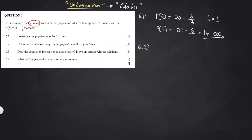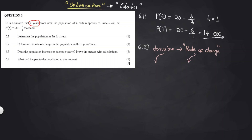Next, determine the rate of change in the population in three years' time. This is a calculus problem — we want the rate of change, not optimize. The rate of change is one definition of a derivative. So we need to find the derivative and then evaluate it at T = 3 to get the rate of change in three years' time.